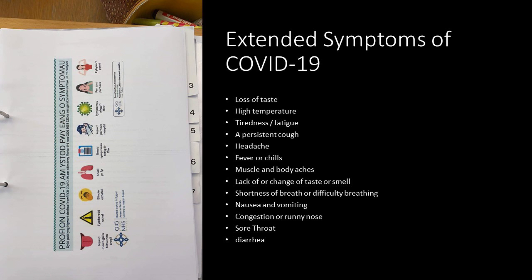The first piece of information links to COVID-19. There's the most up-to-date list of extended symptoms, which are: loss of taste, high temperature, tiredness and fatigue, a persistent cough, headache, fevers or chills, muscle and body aches, loss or change of taste and smell, shortness of breath or difficulty breathing, nausea and vomiting, congestion or runny nose, sore throat, and diarrhea. There's a pamphlet to help you identify signs of COVID-19, and if you suspect someone has these symptoms, you will use the isolation area on site.